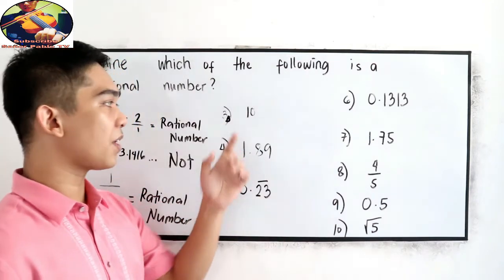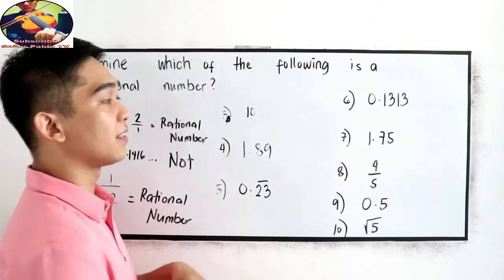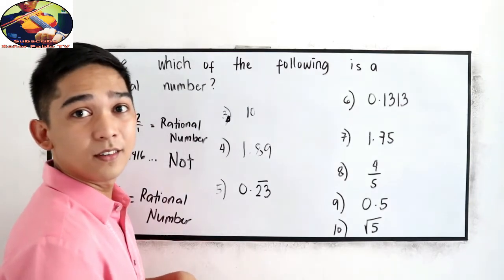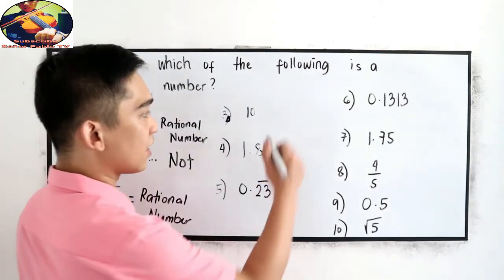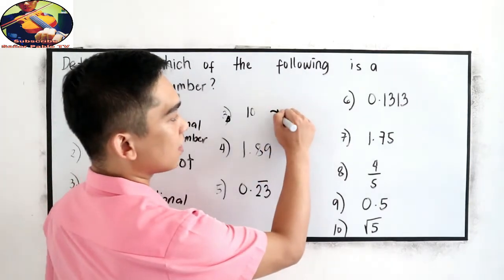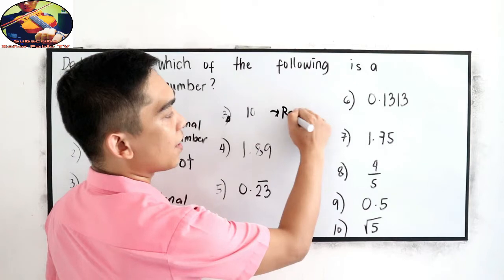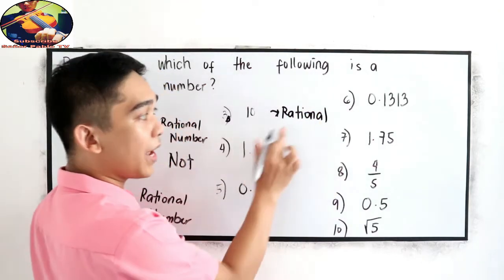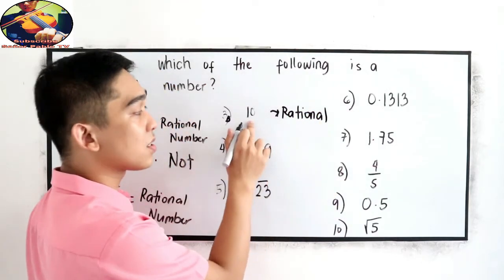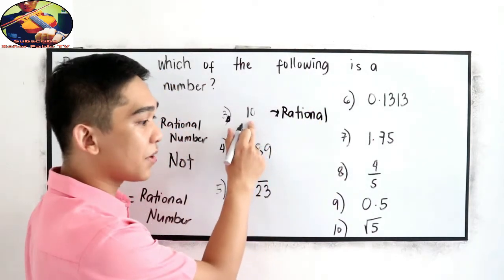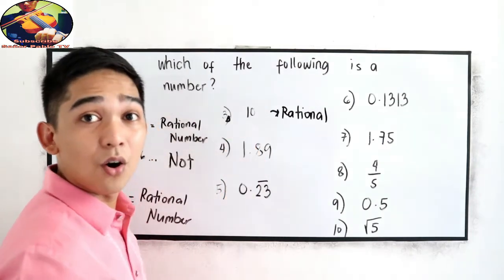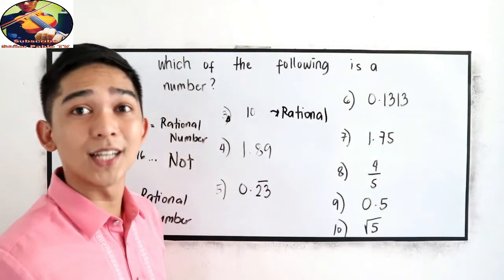For 3b: the number 10. This is a rational number, because 10 can be written as 10 over 1.